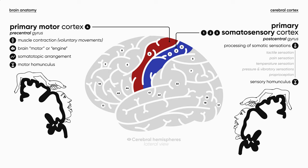And just like the primary motor cortex, it has a particular pattern of somatotopic arrangement. Its upper and medial parts are responsible for the sensory input from the lower limbs, and the lower and lateral parts respectively from the head and neck. This concept is called the Penfield's sensory homunculus.